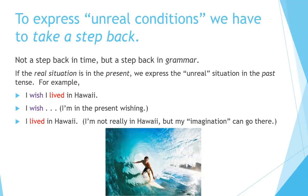To express unreal conditions, we have to take a step back — not a step back in time, but a step back in grammar. If the real situation is in the present, we express the unreal situation in the past tense. For example: I wish I lived in Hawaii. 'I wish' — I'm in the present, wishing. 'I lived in Hawaii' — I'm not really in Hawaii, but my imagination can go there.